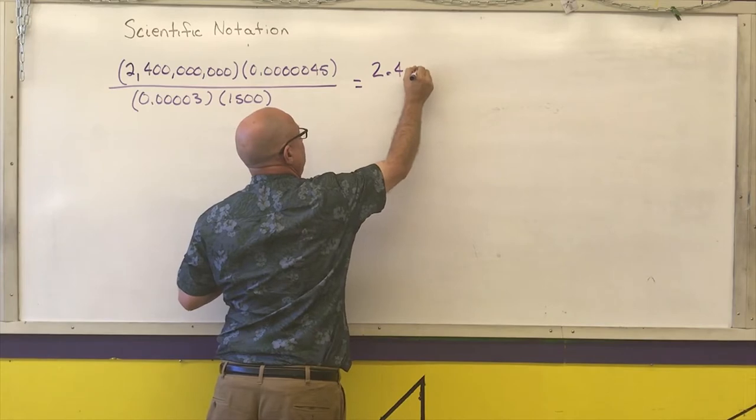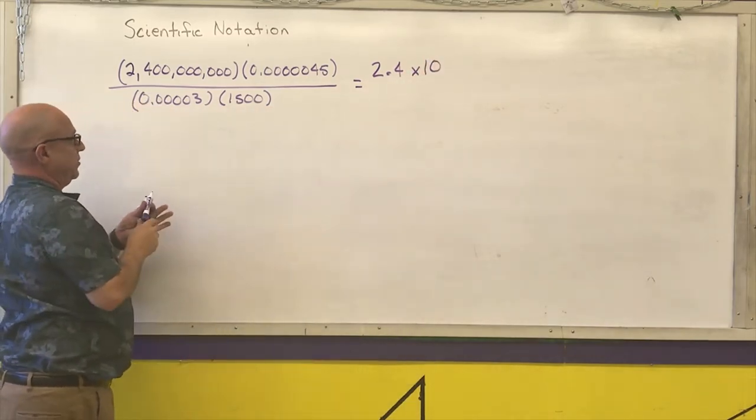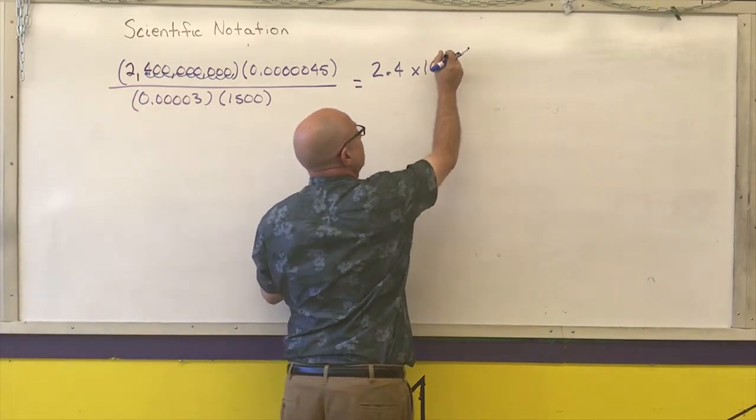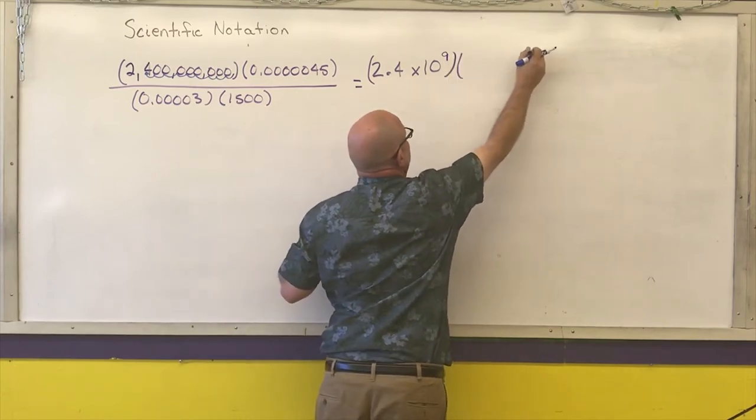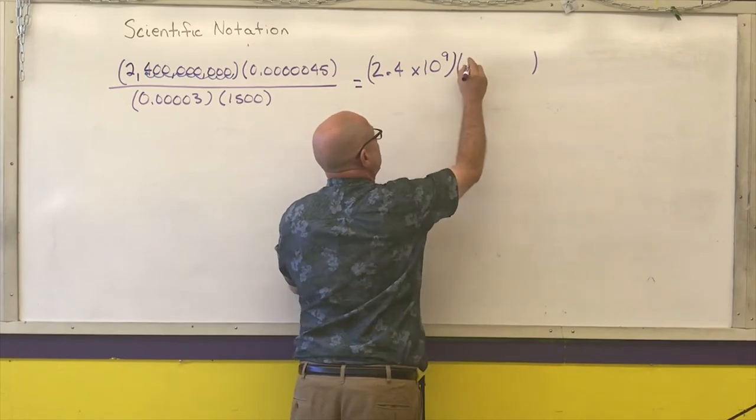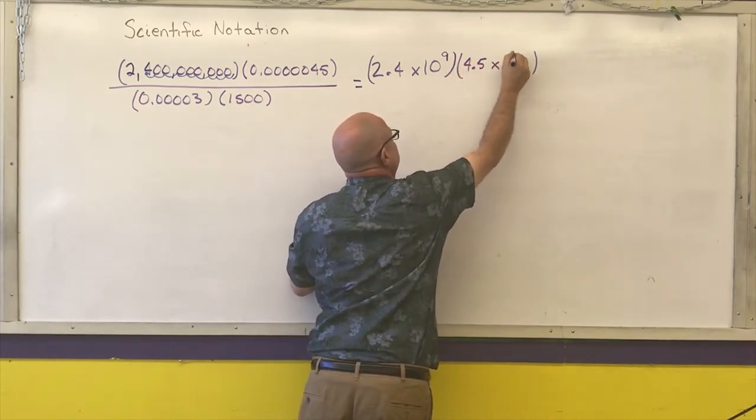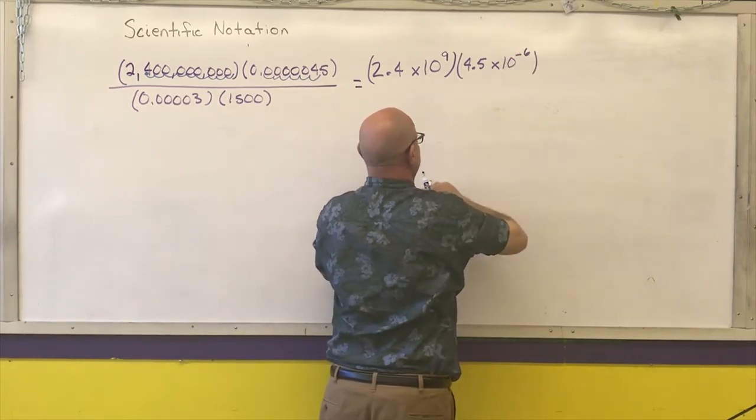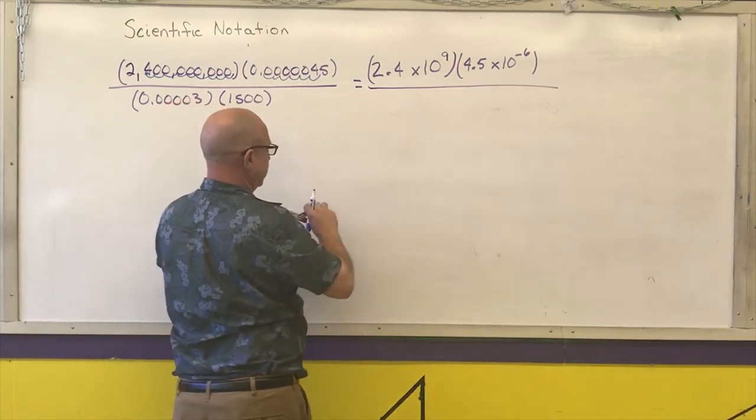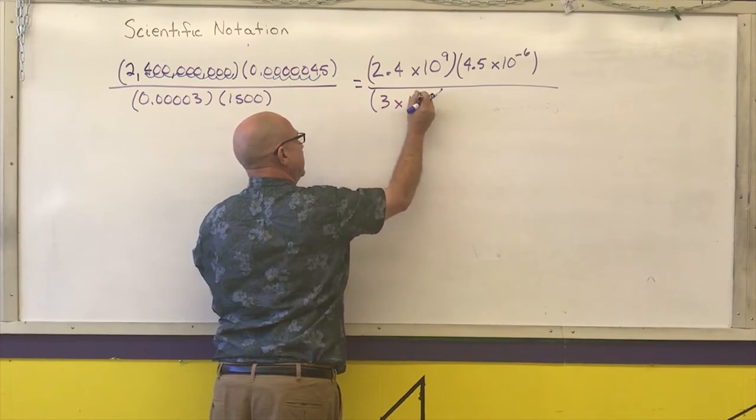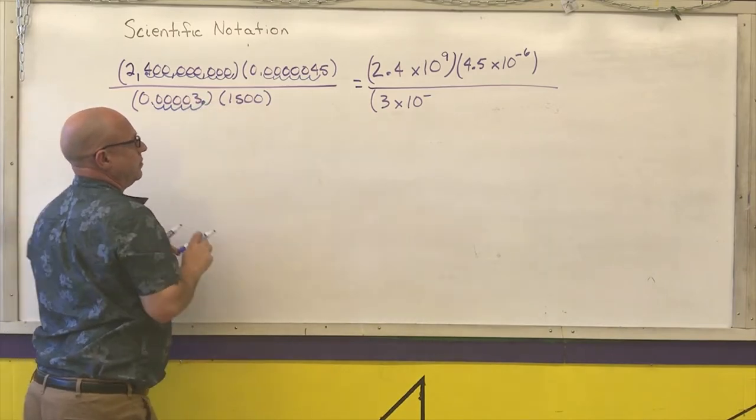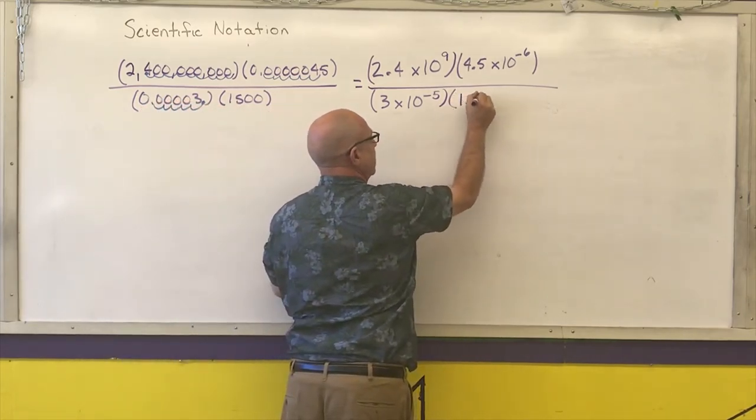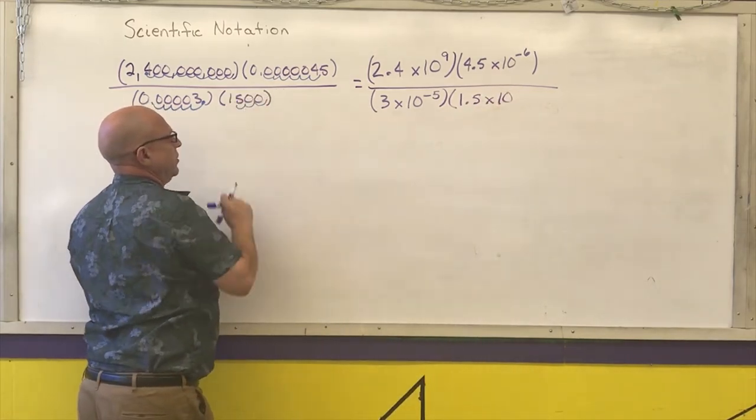There is a lot easier way to deal with this. Turn this into scientific notation. So this is 2.4 times 10 to the, and here's how I do it, I go 1, 2, 3, 4, 5, 6, 7, 8, 9. Count how many places you have to move the decimal point. The next one is going to be 4.5 times 10 to the negative 1, 2, 3, 4, 5, 6. Over 3 times 10 to the negative 1, 2, 3, 4, 5 and now I have 1.5 times 10, 1, 2, 3 cubed.